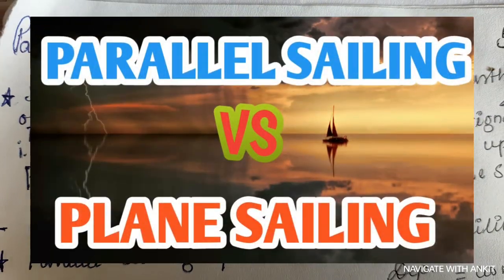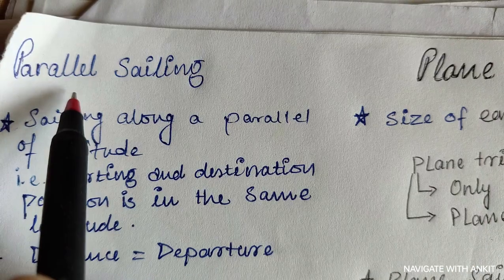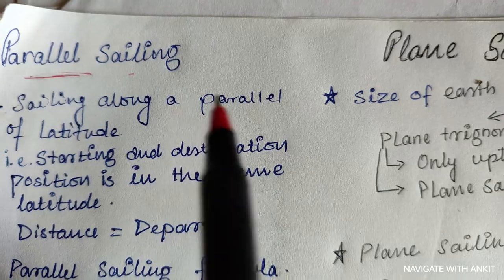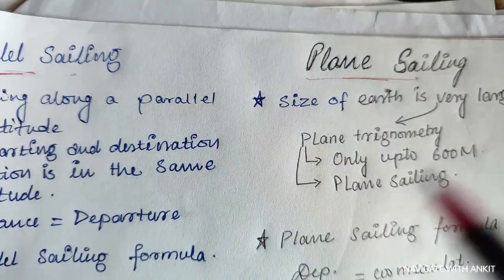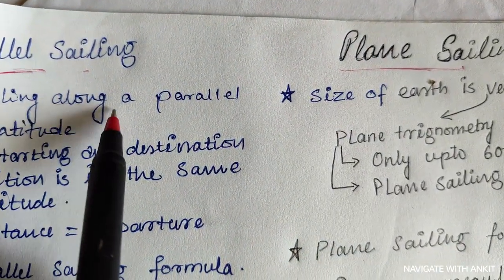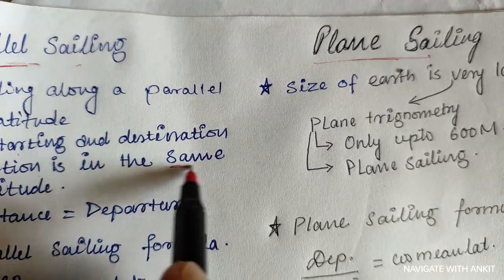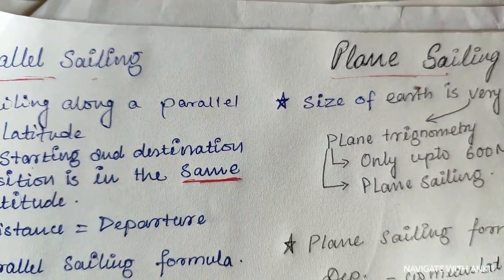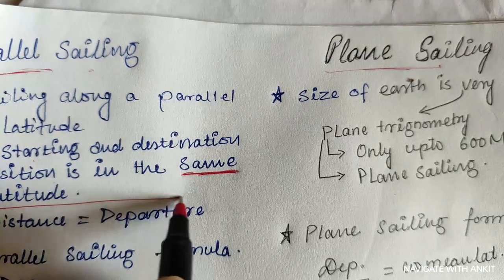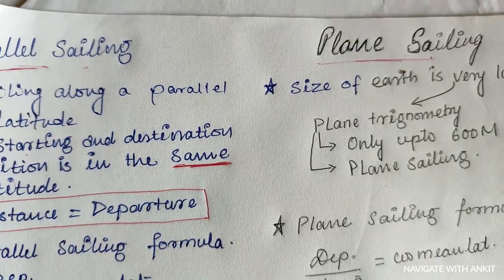Hey guys, what's up. In this video I am going to discuss the difference between parallel sailing and plane sailing. Sailing along a parallel of latitude means the starting and destination positions are in the same latitude. Here the distance will be equal to departure and the course will be either 090 degrees or 270 degrees.